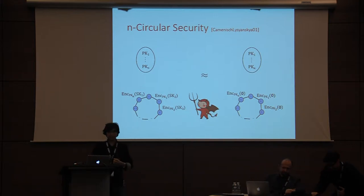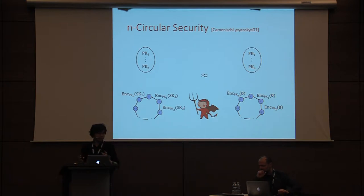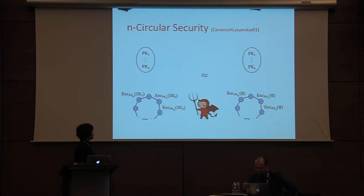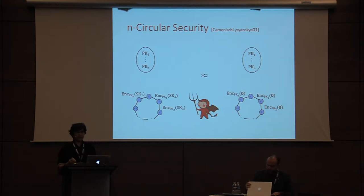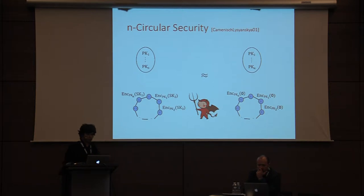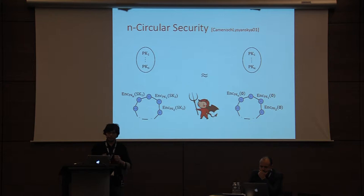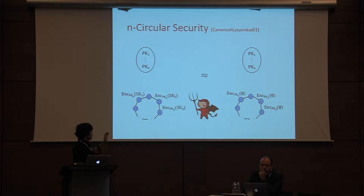Consider the case in which the adversary knows some encryption of some portion of the secret key. A very popular common example of that is n-circular security, in which the adversary is given the encryption of the secret key itself — not the secret key, but the encryption of the secret key — and has to decide whether it has an encryption key cycle or some garbage information.